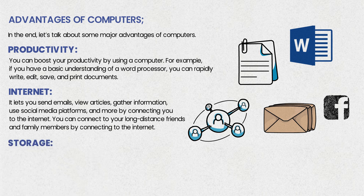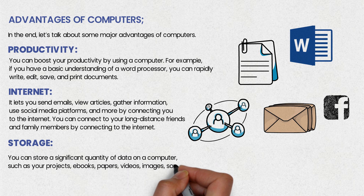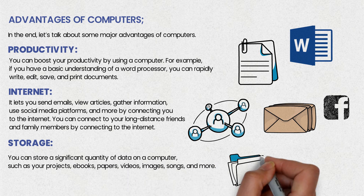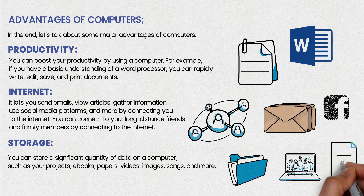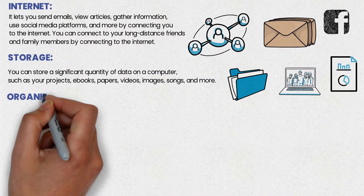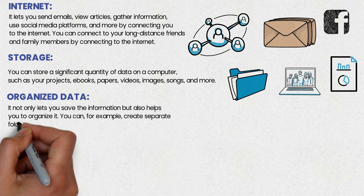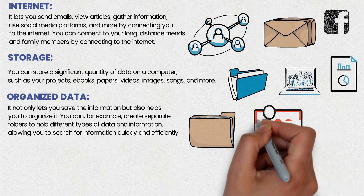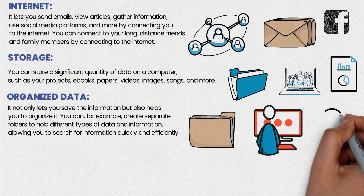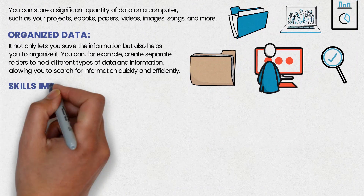Storage — you can store a significant quantity of data on a computer such as your projects, e-books, papers, videos, images, songs, and much more. Organized Data — a computer not only lets you save information but also helps you organize it. For example, you can create separate folders to hold different types of data, allowing you to search for information quickly and efficiently.